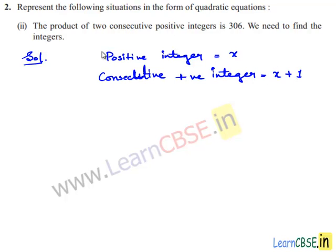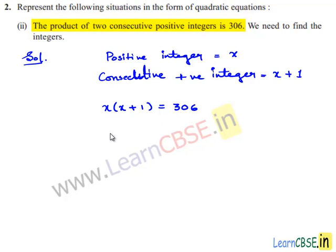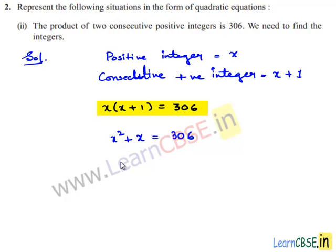According to the given problem, the product of two consecutive positive numbers is 306. That is, x multiplied by (x plus 1) is equal to 306. Expanding: x times x is x squared, and x times 1 is x, giving x squared plus x equals 306. Transposing 306 to the left-hand side, we get x squared plus x minus 306.